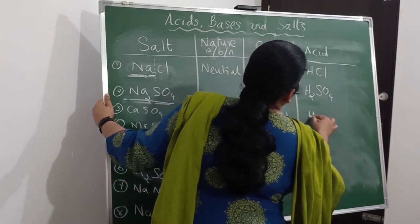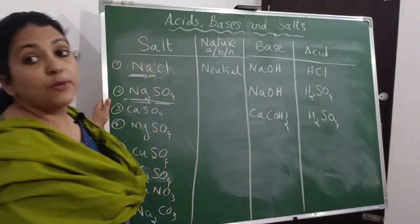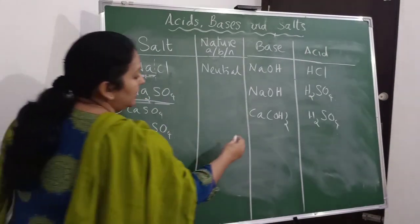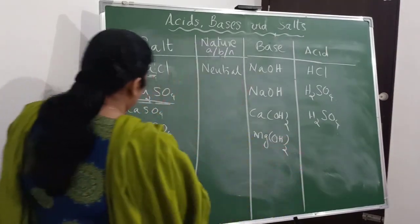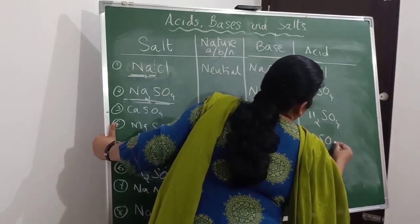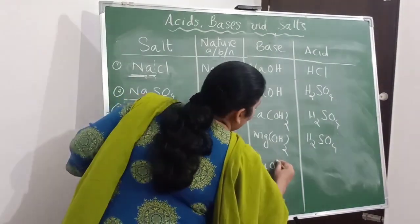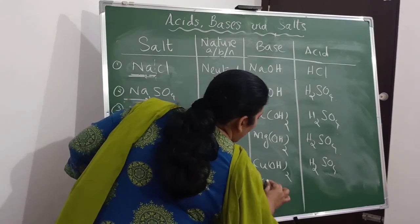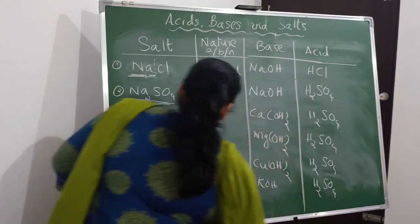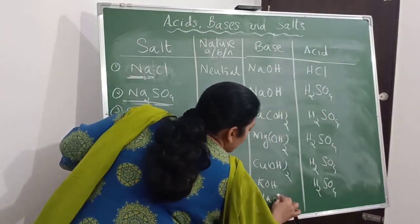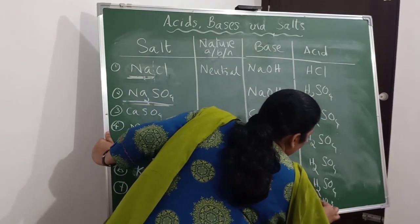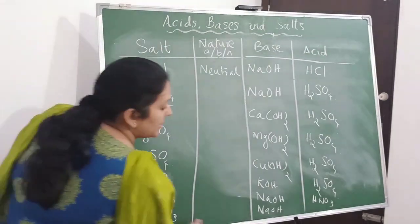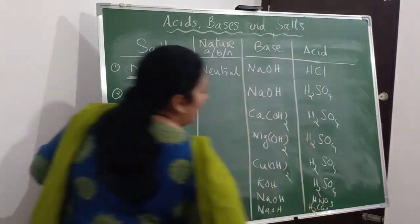Magnesium sulfate is formed from magnesium hydroxide, Mg(OH)2, and sulfuric acid, H2SO4. Copper sulfate is formed from copper hydroxide and sulfuric acid. Potassium sulfate is formed from potassium hydroxide and sulfuric acid. Sodium nitrate is formed from sodium hydroxide and nitric acid. And the last one — sodium carbonate.